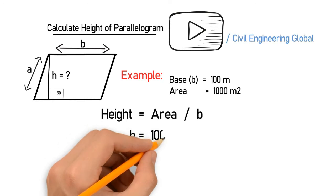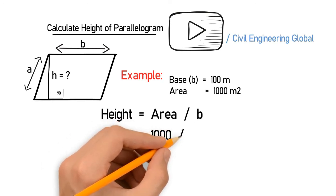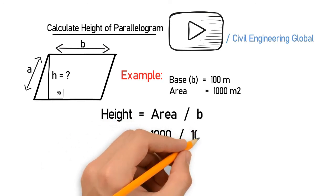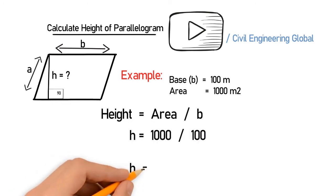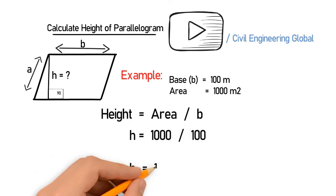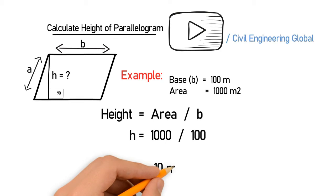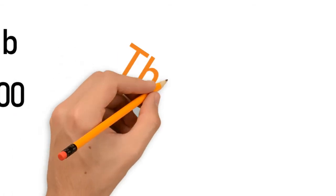The base is 100, so after calculating this you will get H is equal to 10 meters. That is the way how you calculate the height of a parallelogram. Thanks.